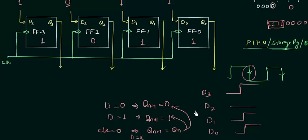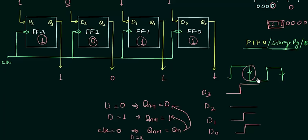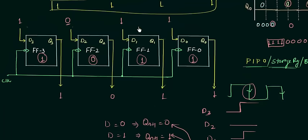Once the clock goes to 0, whatever the value of D is becomes don't-care and Q(n+1) equals Q(n) — the stored value. The previous state is 1 for flip-flop 3, 0 for flip-flop 2, 1 for flip-flop 1, and 1 for flip-flop 0. Now you have stored the data; just take it out in parallel manner. Q3 is 1, Q2 is 0, Q1 is 1, Q0 is 1 — exactly what we wanted to store.